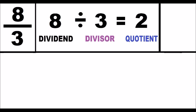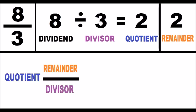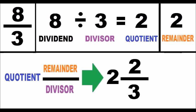Third step: I look at the following diagram and replicate it, replacing each element with the elements of the previously calculated division. Finally, I get the mixed number that is equivalent to the initial improper fraction.